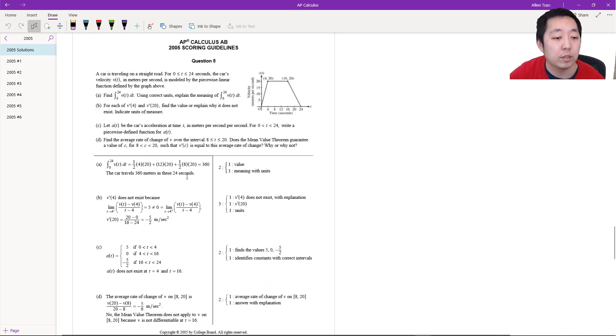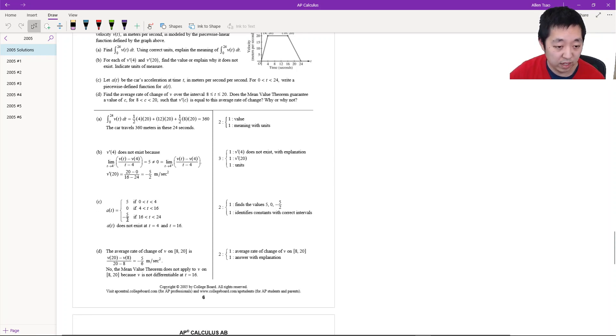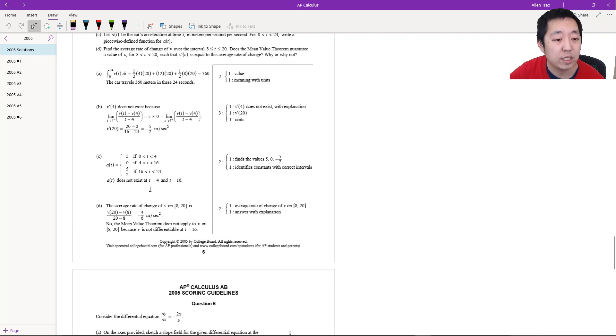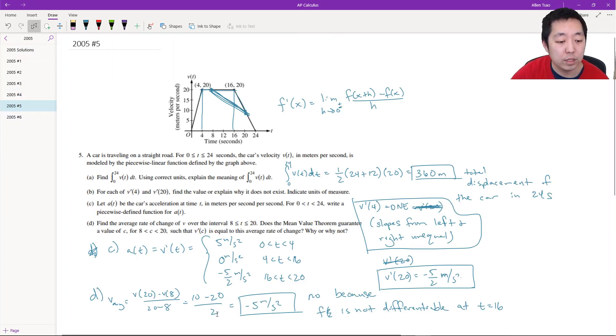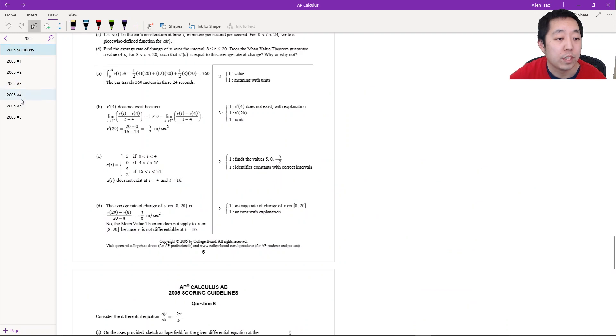360 meters in 24 seconds. Negative 5 halves, 5, 0, negative 5 halves. They're just noting it doesn't exist. Minus 5 over 6—did I calculate that wrong? V of 20 is 10. Oh, 20 minus 8. I just can't do math. 20 minus 8—this should have been 12 over here. Should have been 12, so this should have been negative 10 over 12, or negative 5 over 6. Yeah, okay. I went too fast on the computation there. Mean value because f is not differentiable at t equals 16. So hope you found it helpful. I'll see you in the next video.